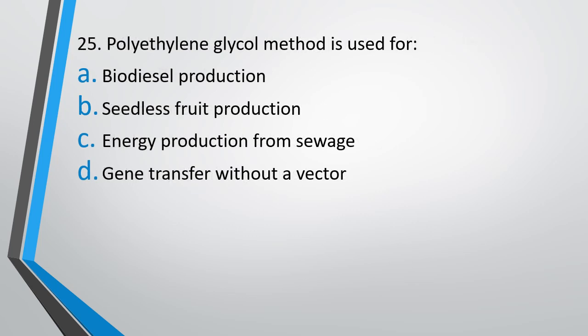Question No. 25. The polyethylene glycol method is used for: Biodiesel production, seedless fruit production, energy production from sewage, or gene transfer without a vector.